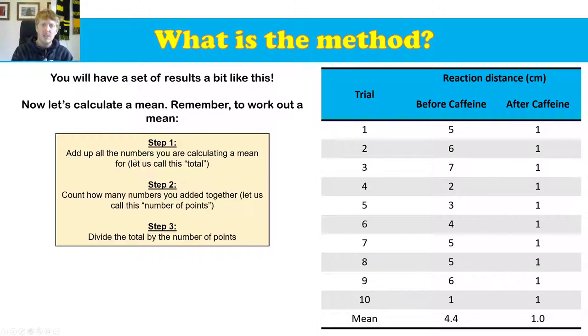To calculate a mean, three steps. Add up all the numbers you were calculating a mean for. In this case, basically add up the numbers in the column. Step two, count how many numbers you added together. In this case, one, two, three, four, five, six, seven, eight, nine, 10 numbers. We're going to call this the number of points and divide the total by the number of points.